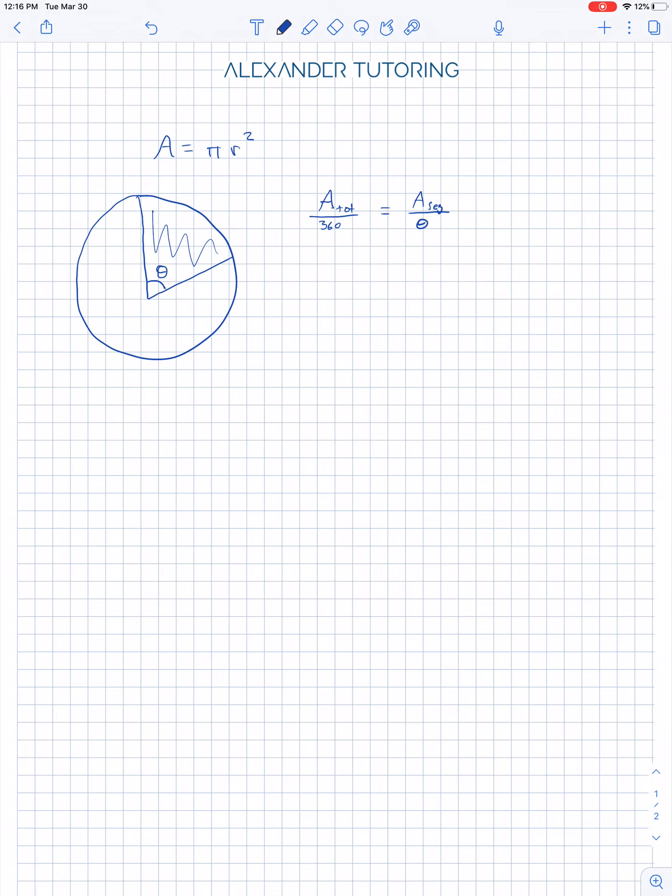Okay, on the left, we know that the total area of a full circle is pi r squared. And then the area of the segment, which is what we want to find, divided by theta, or the angle carved out by the pizza slice.